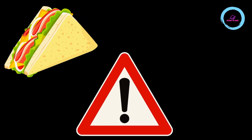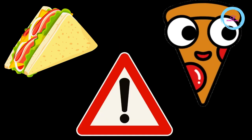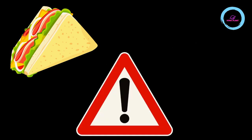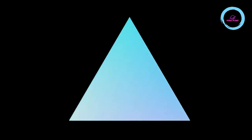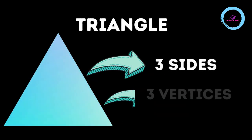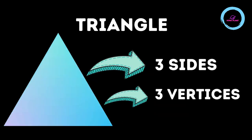This is a sandwich. This is a road sign. This is a pizza slice. So what's common in all these? They are all triangles. A triangle has three sides and three vortices. This is a cup.